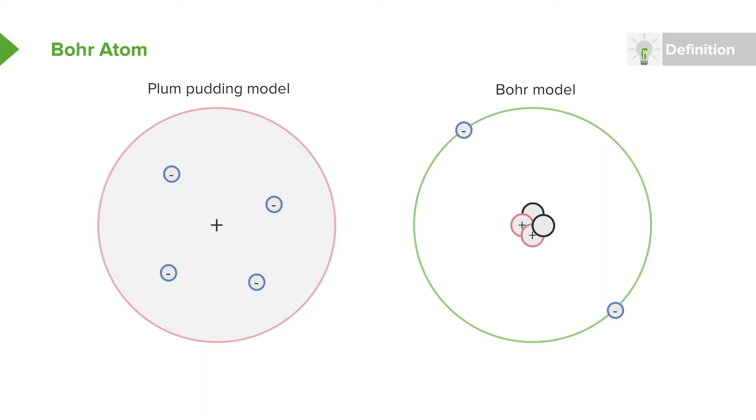In the center, we have the nucleus, which we've already discussed. It has positive charges, which are protons, as well as neutral charges, the neutrons. And then on the outside, you have these electrons that are very small particles orbiting at a very great distance relative to the size of the nucleus itself.